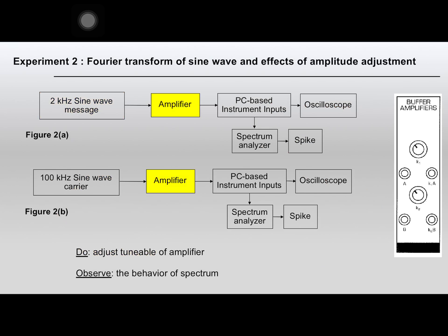In Experiment 2, construct the circuit according to the block diagram shown in Figures 2A and 2B by adding an amplifier module to the circuit you previously used in Experiment 1. Then adjust the tunable knob of the amplifier left and right, and see what happens in the time domain and what happens in the frequency domain.